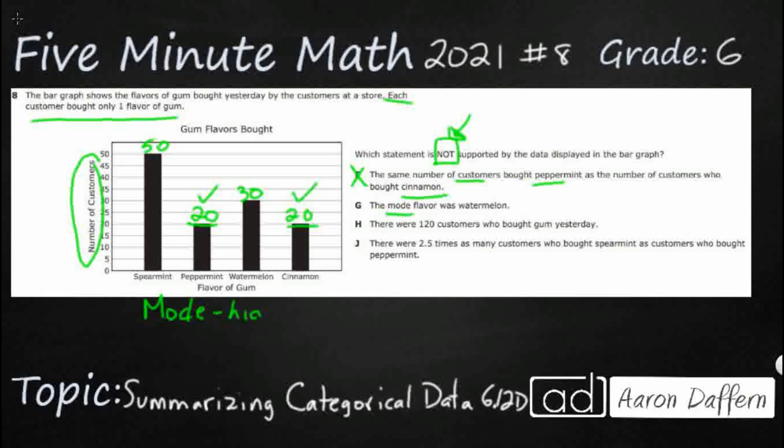So if that's the case, I don't think it's watermelon. Look at our watermelon here is 30. But just visually, it's obviously able to see that our spearmint here looks like this might be the mode.